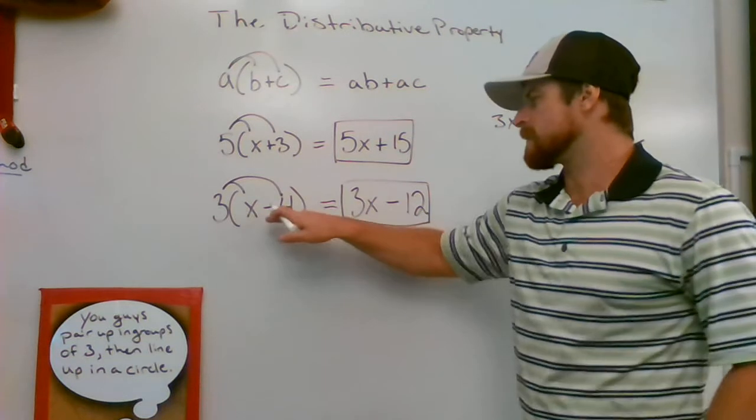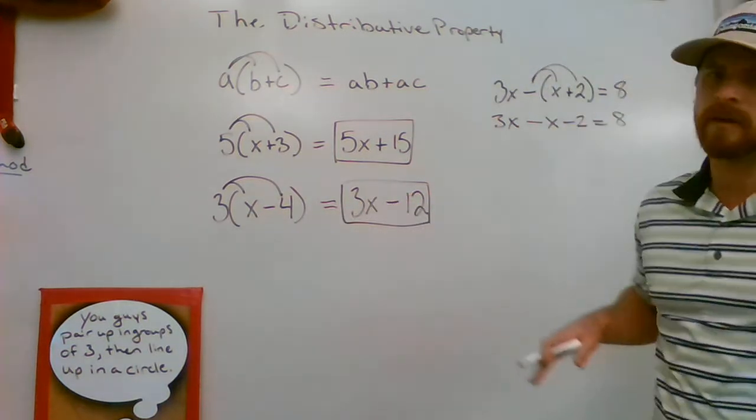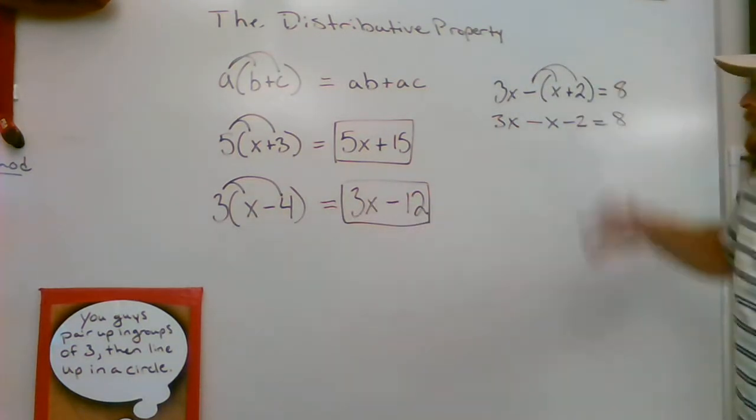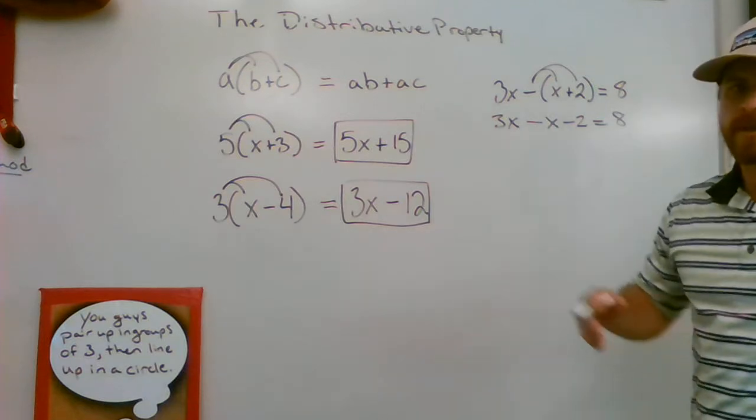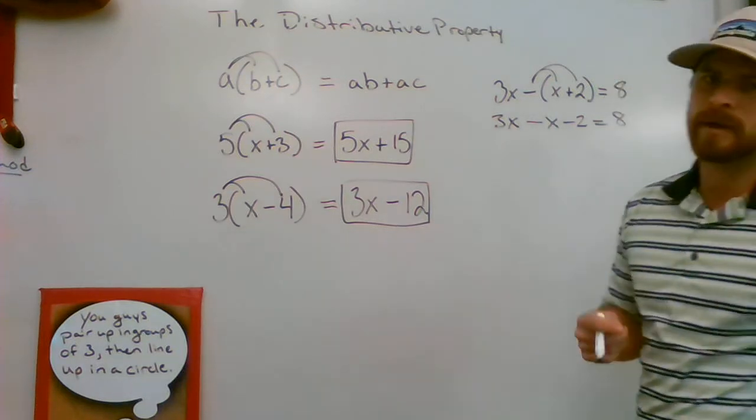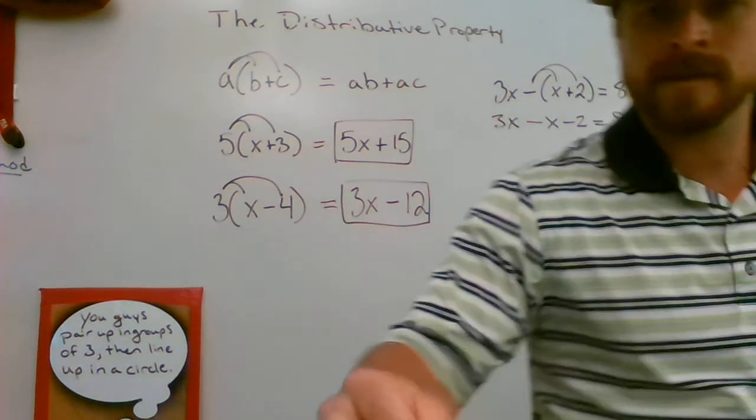3 times x gives me 3x. 3 times negative 4 gives me a negative 12. Okay, there's the basics of the distributive property. You're going to see it a lot in your algebra classes, so make sure you're prepared for it and good luck on your upcoming test.